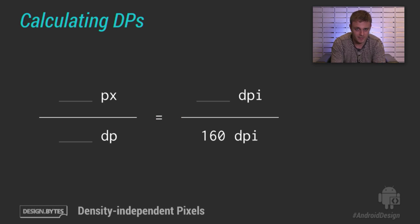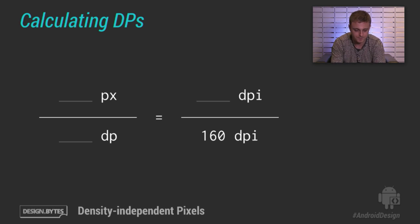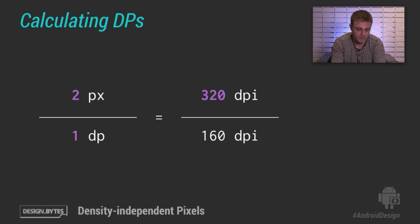Let's look at some math to help convert between pixels and DP units. Here's the only real formula you need — to solve for one variable, you simply plug in the other two. The definition of DPs: 1 pixel is 1 DP at 160 DPI. On a 320 DPI screen, 1 DP is actually 2 pixels — two pixels across and two pixels down.